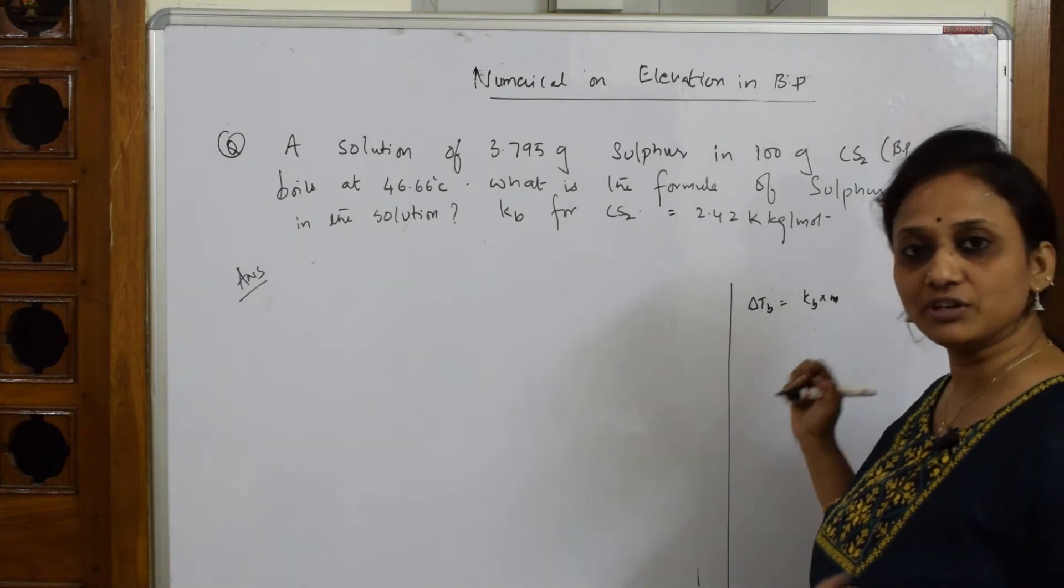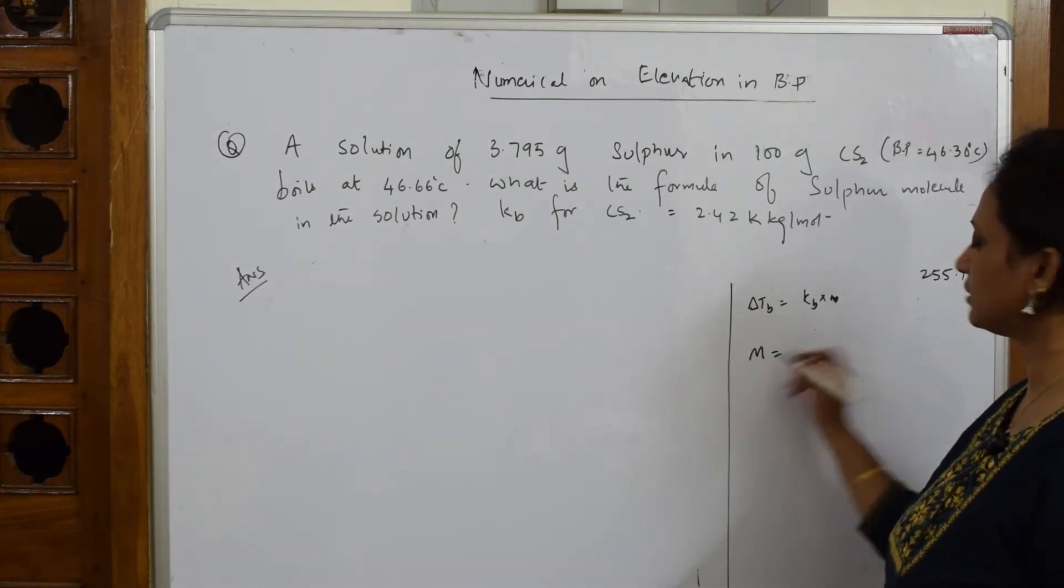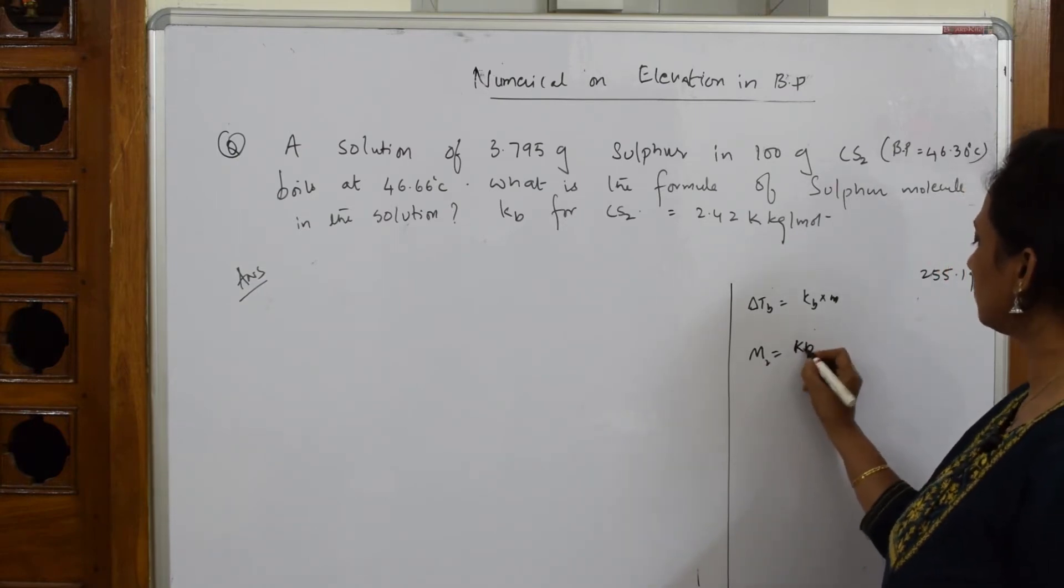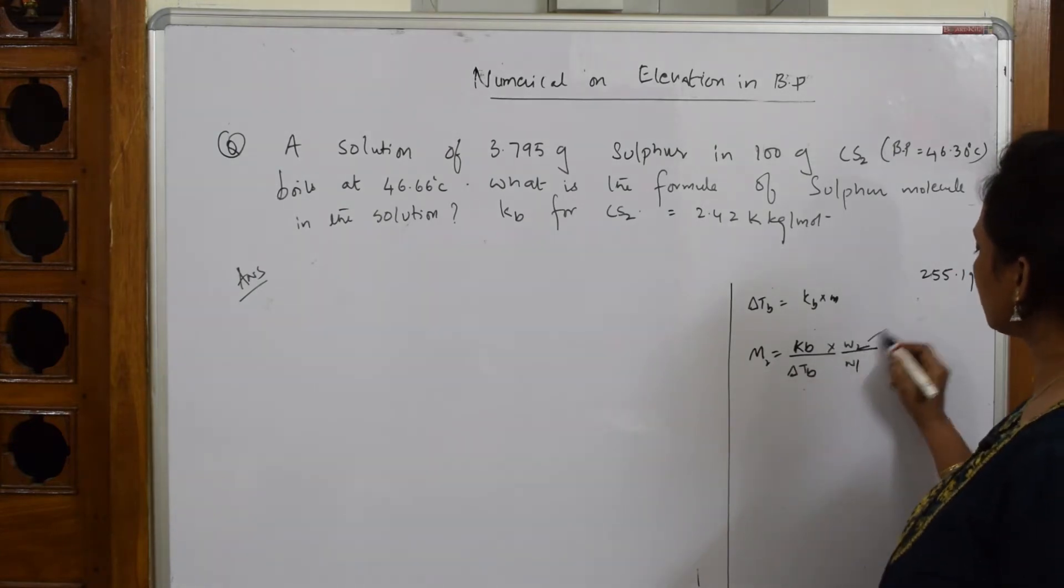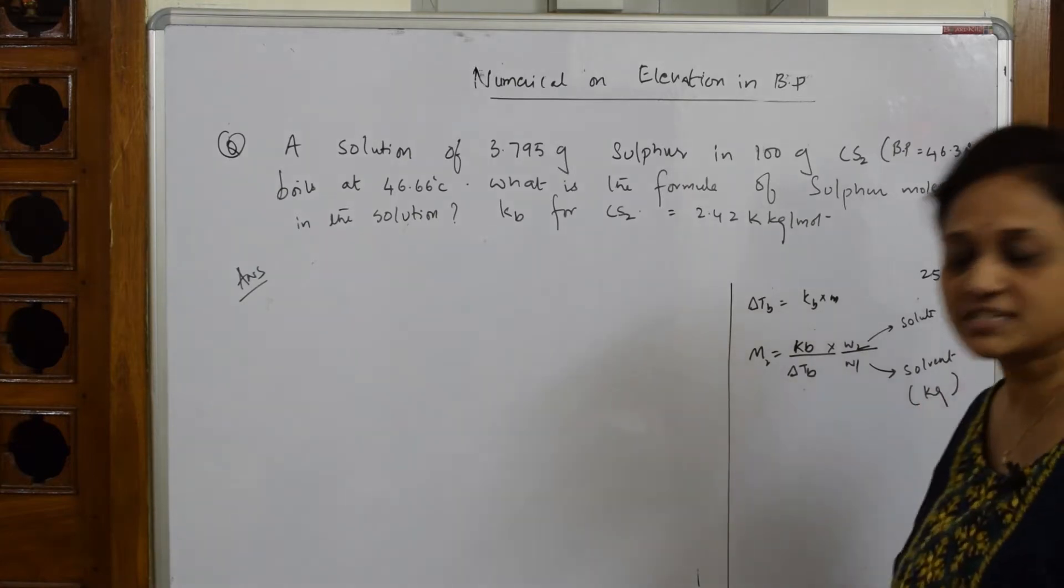Delta Tb is equal to Kb into m. Further, when you write the formula which I've already told in two earlier videos, capital M molecular mass, that is your molar mass of the solute, which is equal to Kb by delta Tb into w2 by w1. This is for the solute weight, this is for the solvent weight, and that solvent weight should always be in kg.